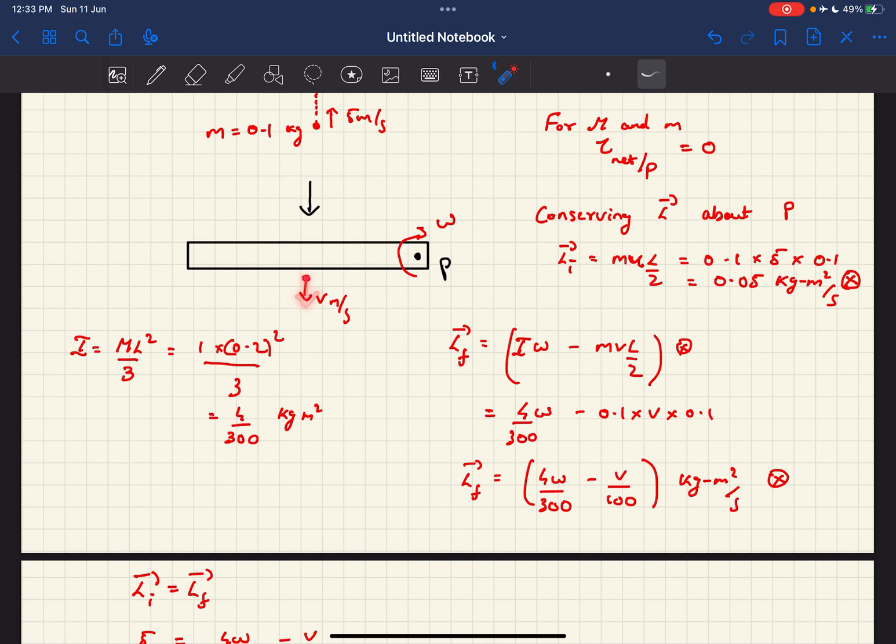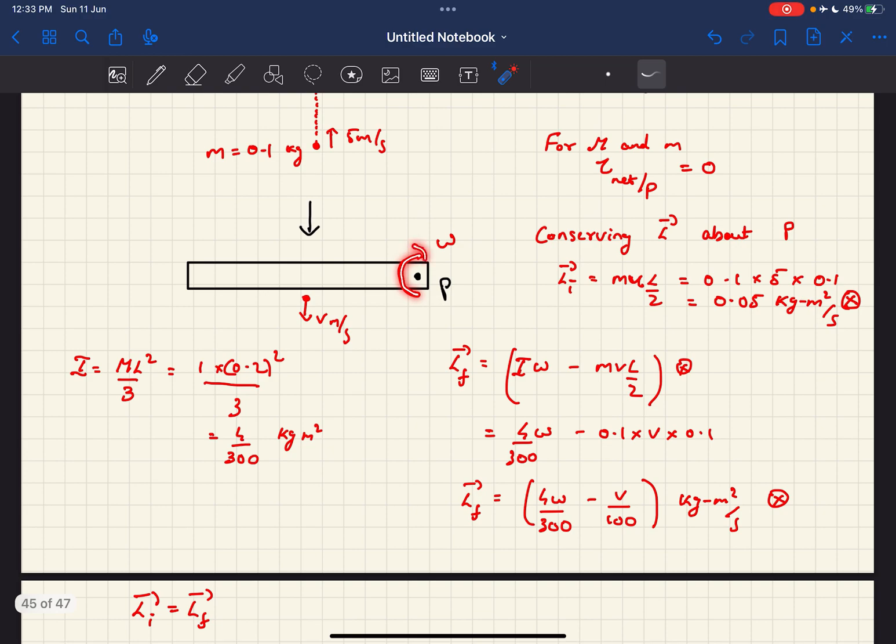So in the direction you can just find by curling your fingers. If you curl your fingers in the direction of omega, you'll get that the angular momentum is into the plane.